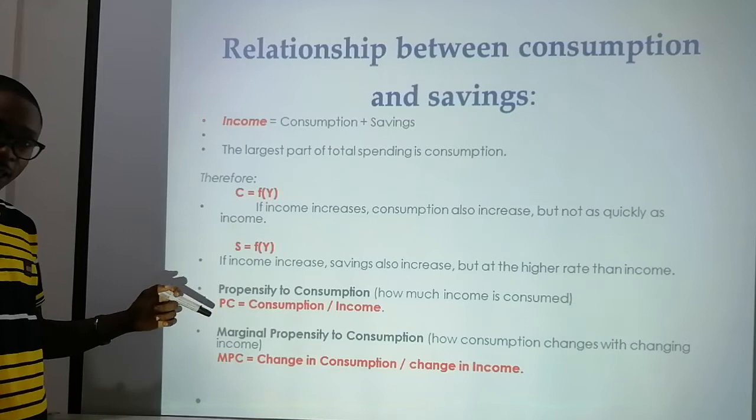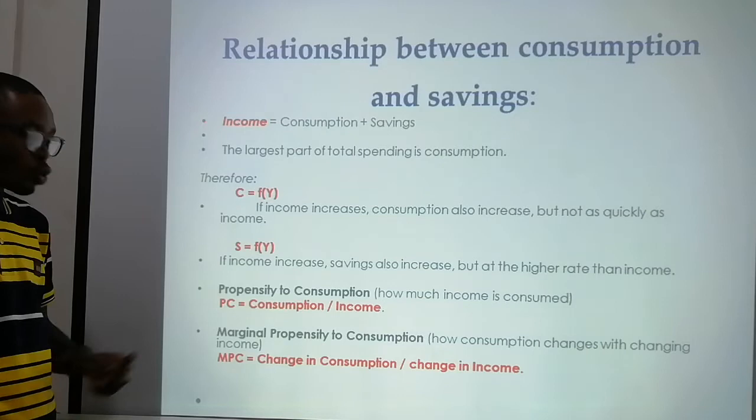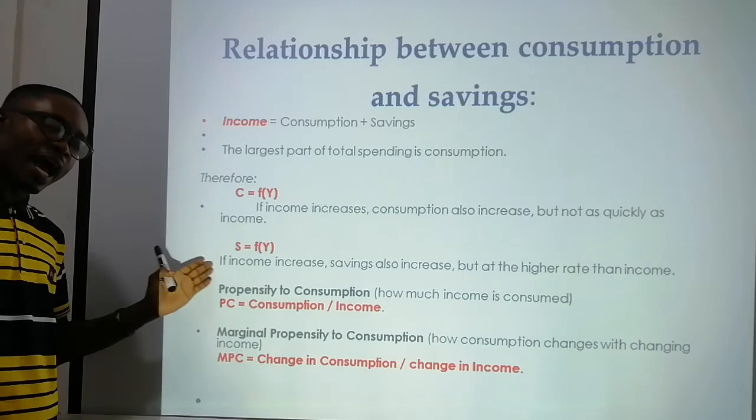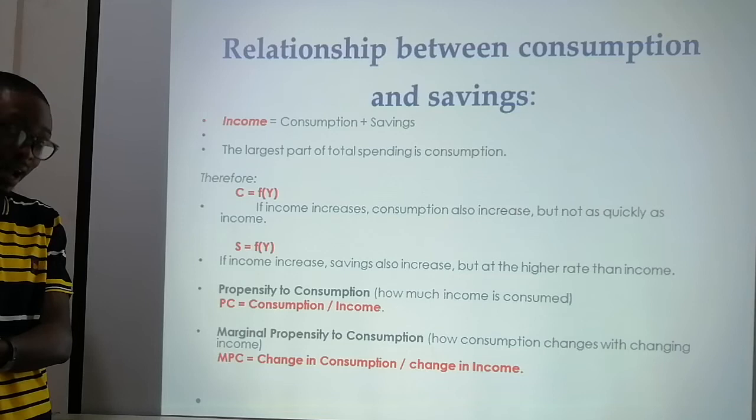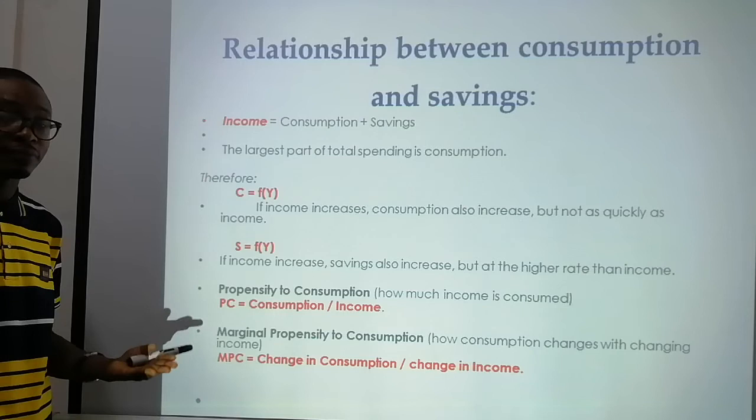The savings equation is: S = f(Y), where Y is income. So if income increases, savings also increases. Whenever your income increases, what you were saving before — say 300 cedis from a 1,000-cedi income — must double or triple when income reaches 3,000 cedis.